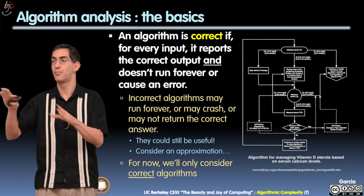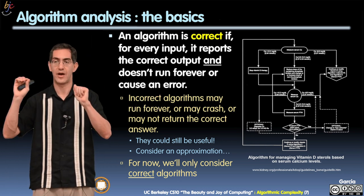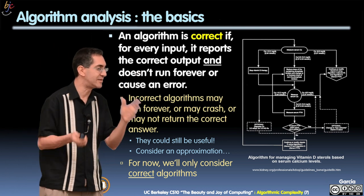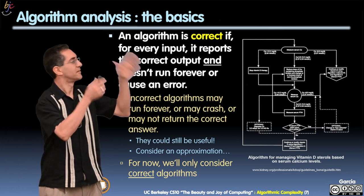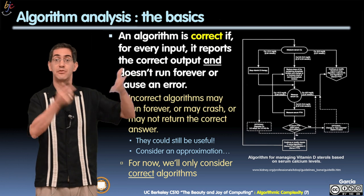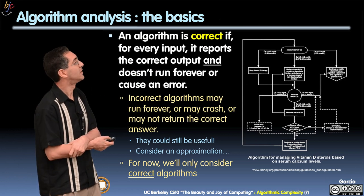But from now on, for this lecture, it's only correct algorithms we're talking about. No approximation, no pretty good, no looping, and no crashing. And this is an example of an algorithm for managing vitamin D steroids, some kind of process of vitamin D and it's complicated. It's an algorithm that they use for managing vitamin D something.